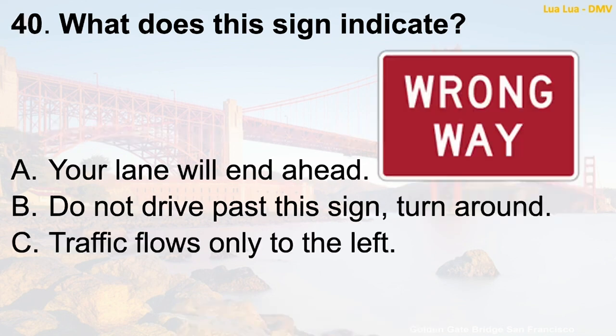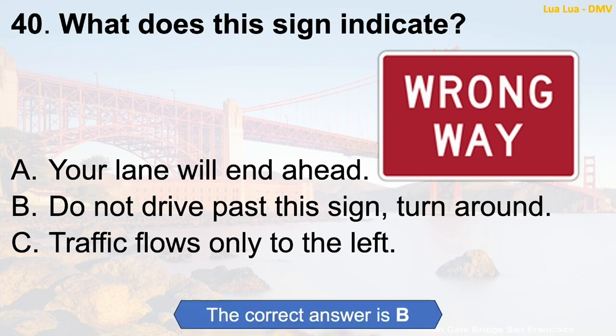Question 40: What does this sign indicate? A. Your lane will end ahead. B. Do not drive past this sign, turn around. C. Traffic flows only to the left. The correct answer is B: Do not drive past this sign, turn around.